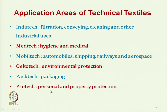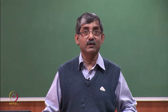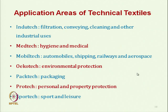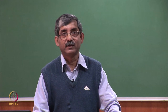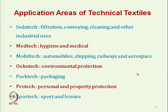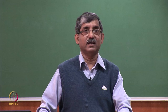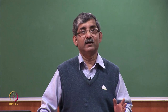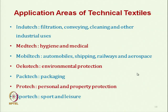Protech covers personal and property protection, like extreme heat or fire protective clothing and extreme cold protective clothing. Sporttech covers sports and leisure wear. So these are the 12 areas in which technical textiles are divided based on areas of application.